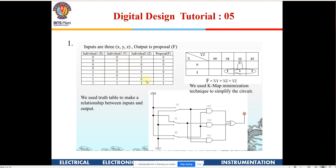The approach for any problem is to first list out the truth table. We have three variables X, Y, Z, and for the proposal to pass, at least two must be yes. First we make a truth table, then we make the K-map. We've already done this — the result is AB + AC + BC. That's the combination.